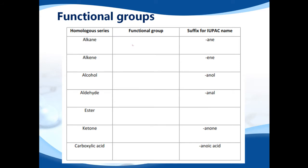Next, functional groups. So we'll start with the alkanes. We have a carbon with a single bond to another carbon atom. So it's a carbon to carbon single bond.